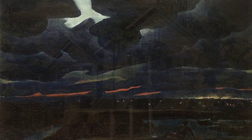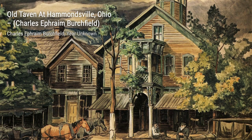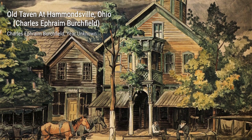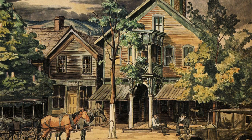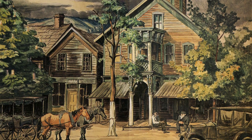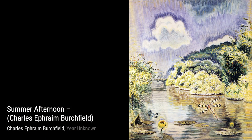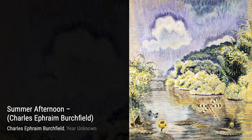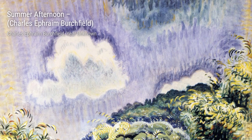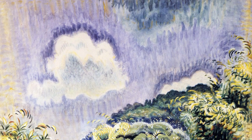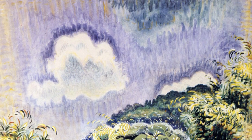In Song of the Marsh, Birchfield transports us to a tranquil marshland. The soft, muted tones and the delicate reflections in the water evoke a sense of calm and serenity. Golden Dream takes us on a journey through a dreamlike landscape. The warm, golden hues and the ethereal quality of the painting invite us to get lost in its beauty.